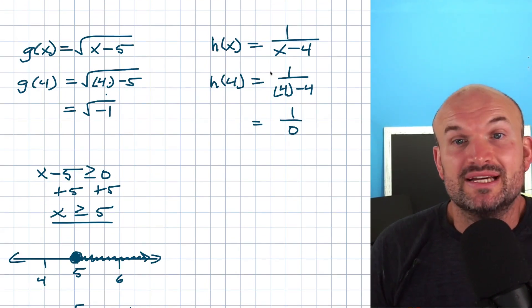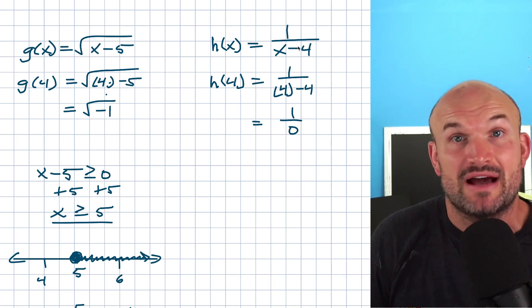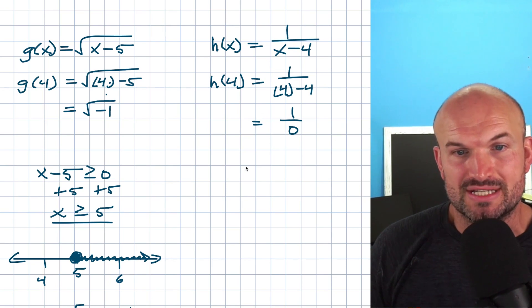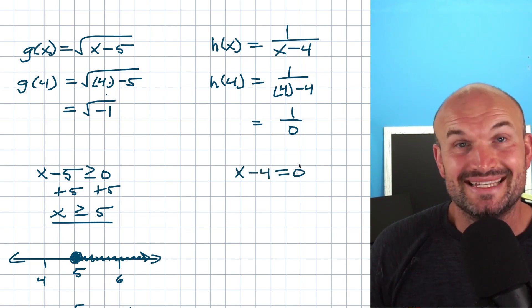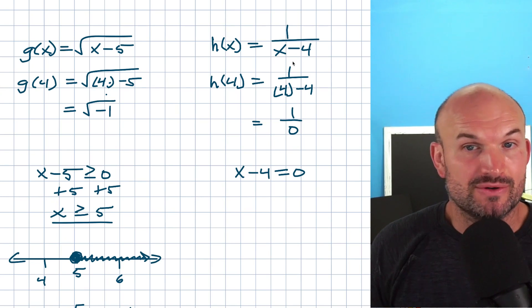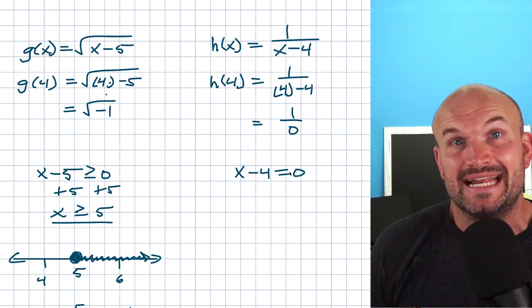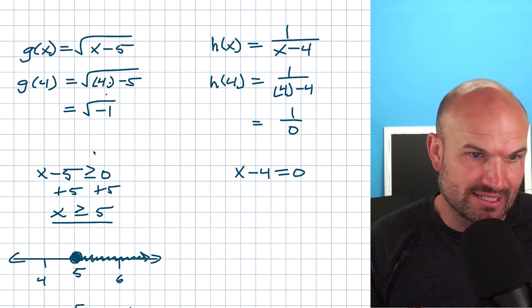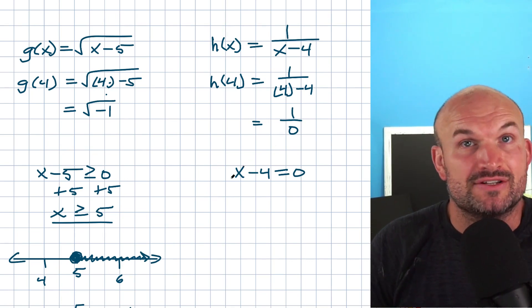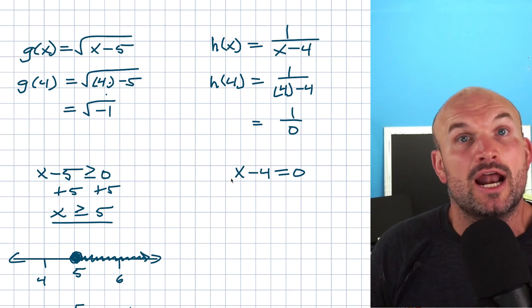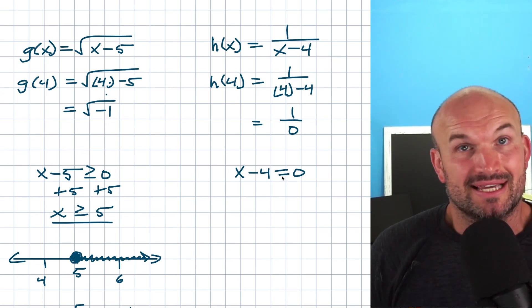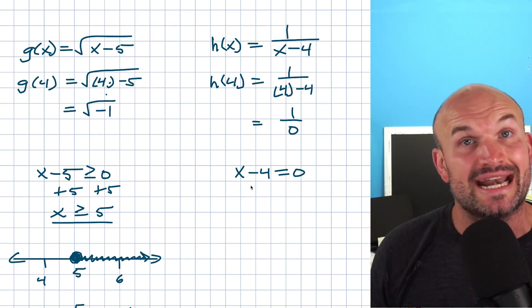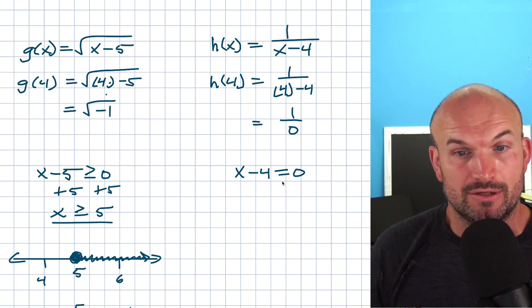Looking back at h(x) = 1/(x - 4): you cannot divide by 0, so anything that makes the denominator equal to 0 is not in the domain. I set the denominator equal to 0 and solve — those values are excluded. This is a little different from the square root approach, but the same idea: we're looking for values not in the domain rather than values that are.